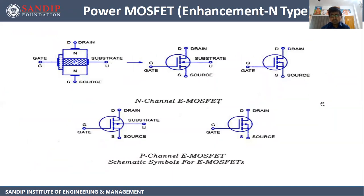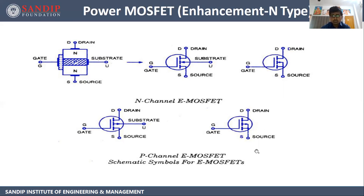For the symbol of power MOSFET: for N channel enhancement type MOSFET, the arrow is inward, and for P channel the arrow is outward. The terminals are the same whether it's N channel or P channel — gate, drain, and source.